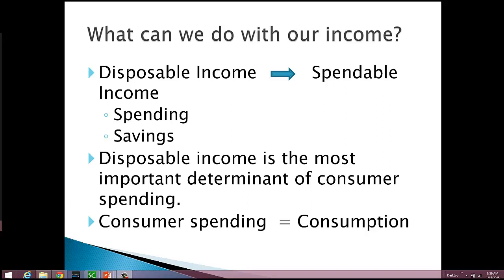Looking a little bit more closely at this relationship between income and consumption spending. Remember disposable income — we called it spendable income. There are really only two things we can do with our income: we can spend it or save it. What we spend becomes consumption spending. So we should be interested in what the relationship is between changes in income and how that changes our spending and savings habits. That's one of the primary things that Keynes was looking at in his aggregate expenditures model.